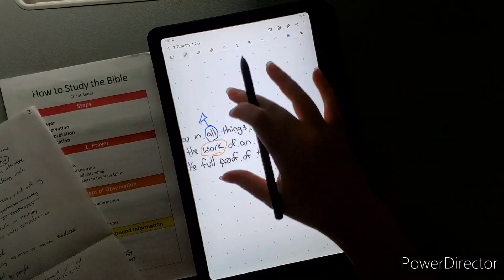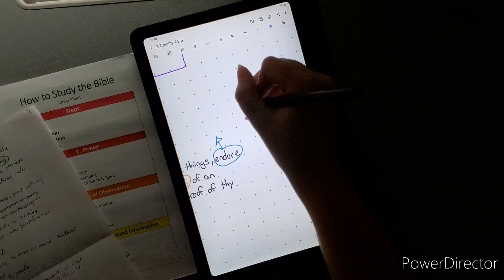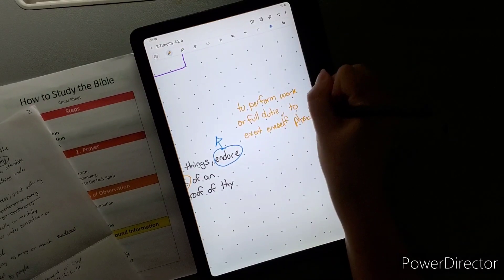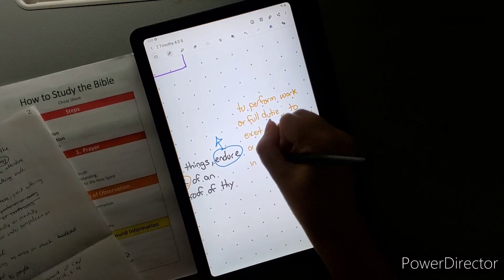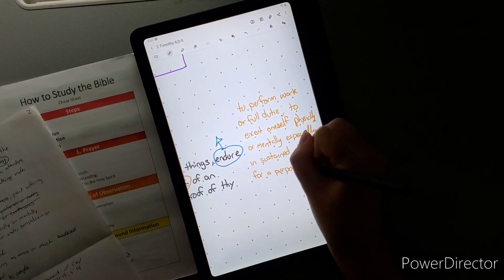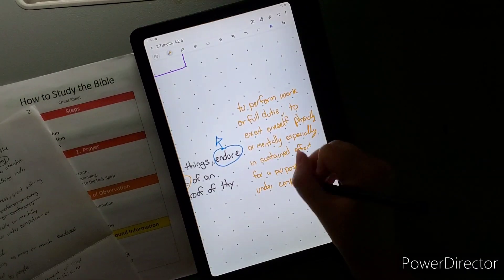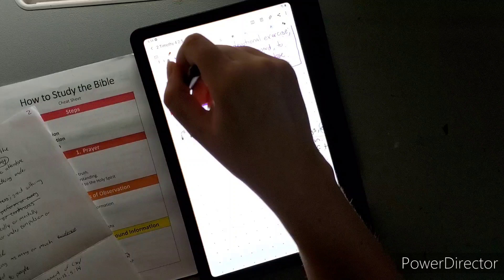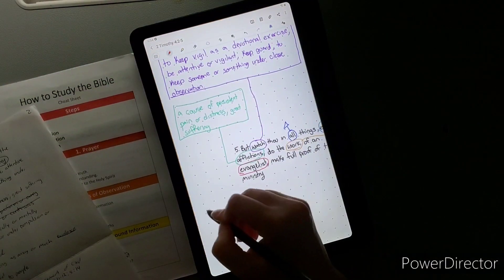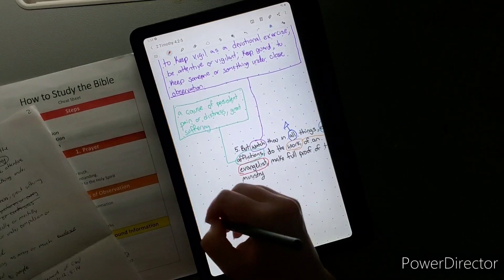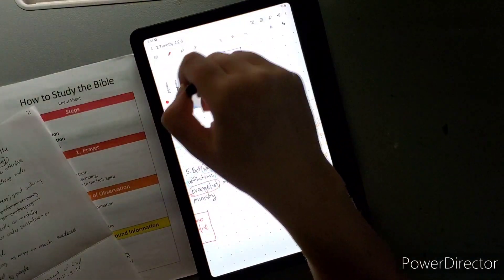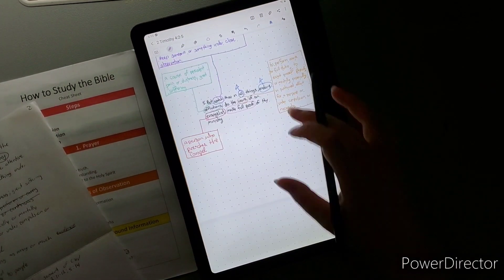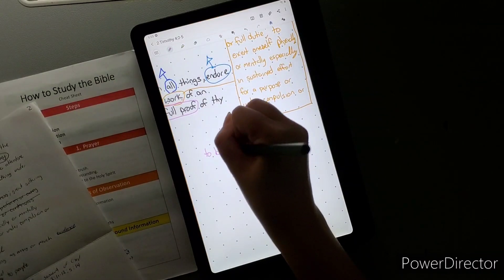Make full proof of thy ministry. Make full proof is actually one word in the Greek and it's to bring into being as many or much evidence. Evidence is an outward sign. Basically it's saying make, show the outward sign of the evidence of your ministry. Make sure that it is seen. Ministry is the services provided to people. Ministry is the things that you're doing for God and people, serving God and serving people, making sure that there is an outward, there's evidence for what you're doing.